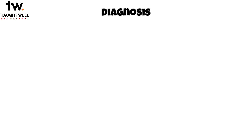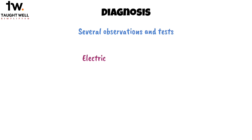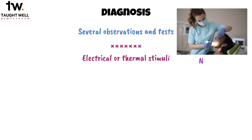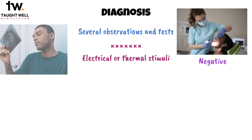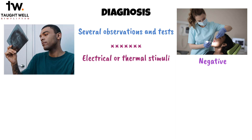How do we diagnose this condition? Diagnosing a tooth with an apical cyst involves several observations and tests. The pulp of such a tooth typically does not respond to electrical or thermal stimuli, and results from other clinical assessments usually yield negative findings, except when examining radiographs.